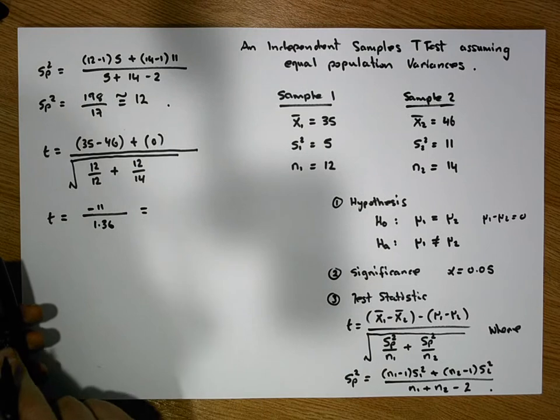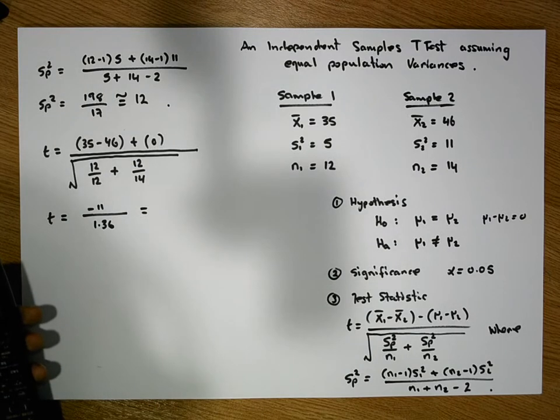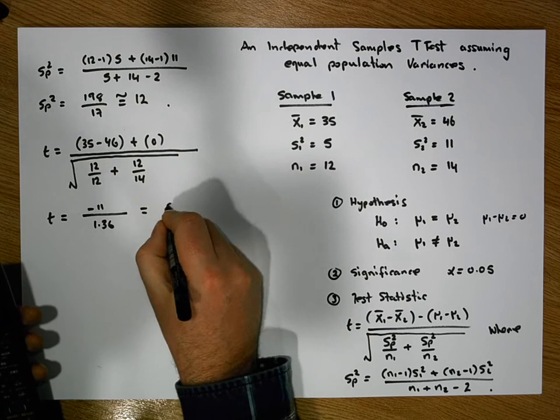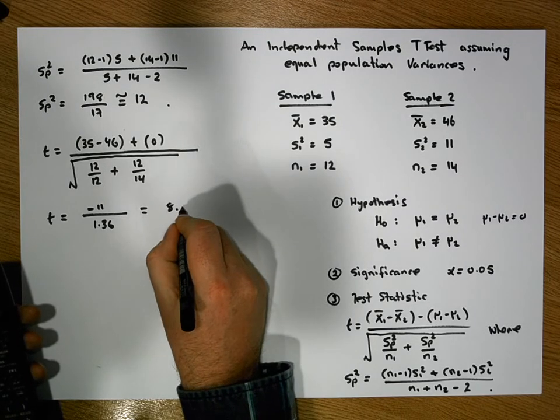So my test statistic is 11 divided by 1.36. Don't forget the negative sign. So it's equal to 8, 8 point, it's about 8.1.